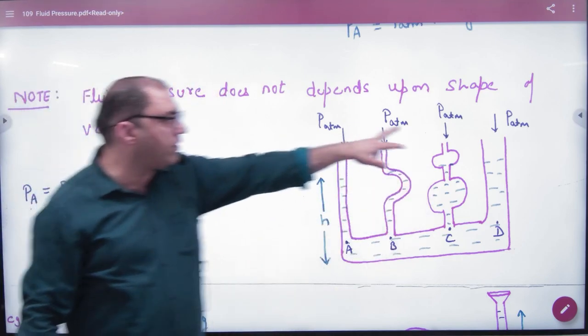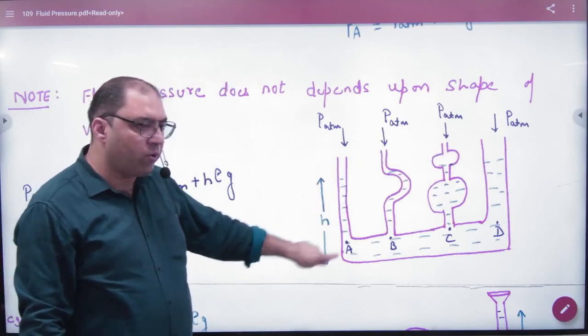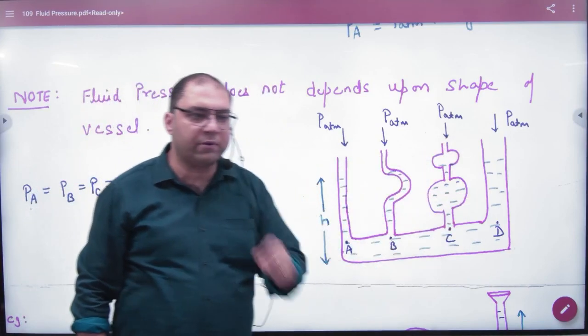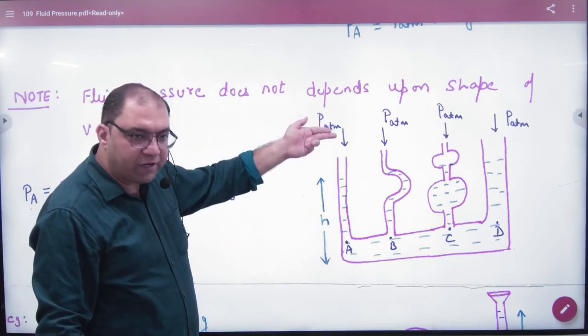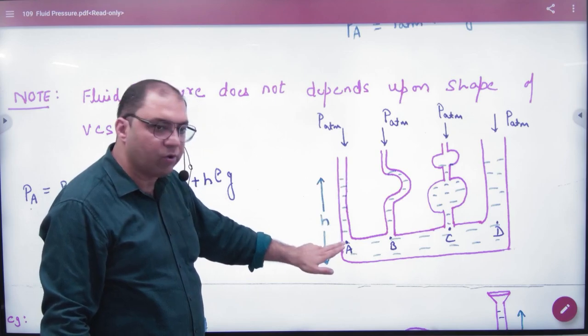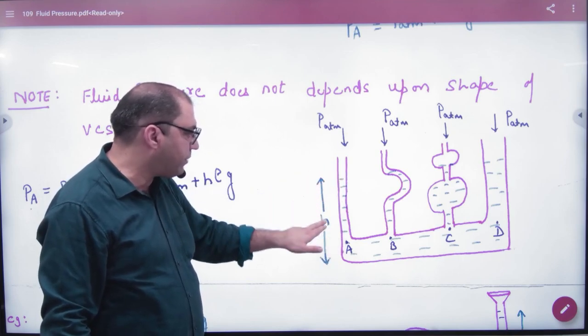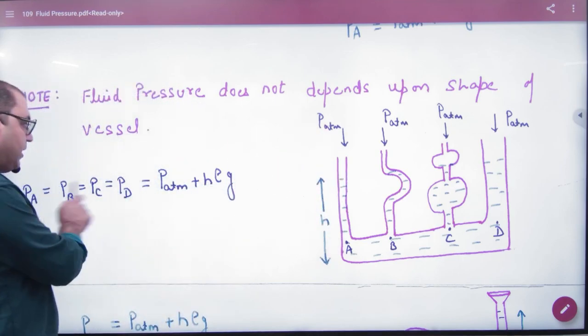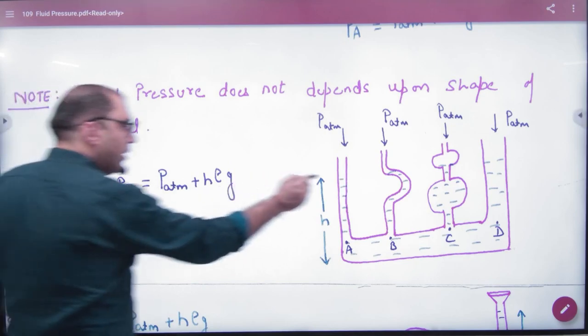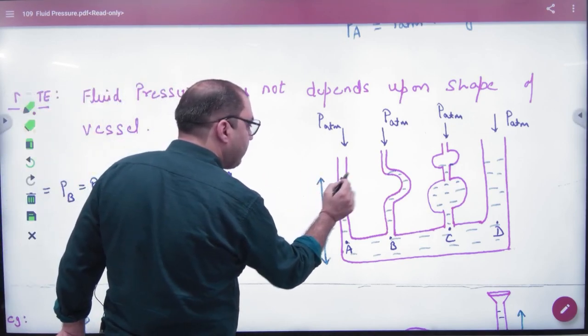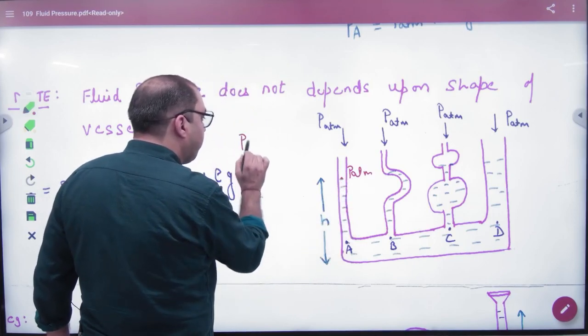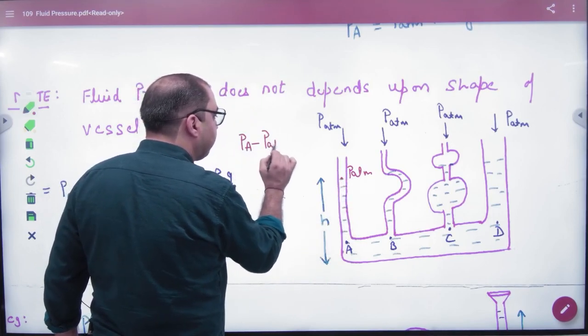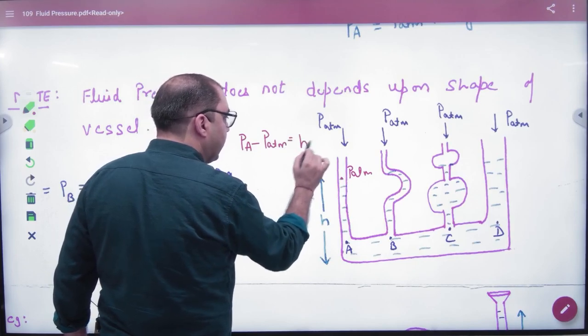What does the atmospheric pressure look up? Tell me. A point, B point, C point and D point. How much pressure will be on the A point? It will be the same. How much? PA minus atmospheric pressure. Take one point. So PA minus atmospheric pressure is H rho G. PA. Make it like this. What will be the pressure on the topmost point? What will be P? Atmospheric. So this is A point. So PA minus P atmospheric pressure is equal to H rho G.